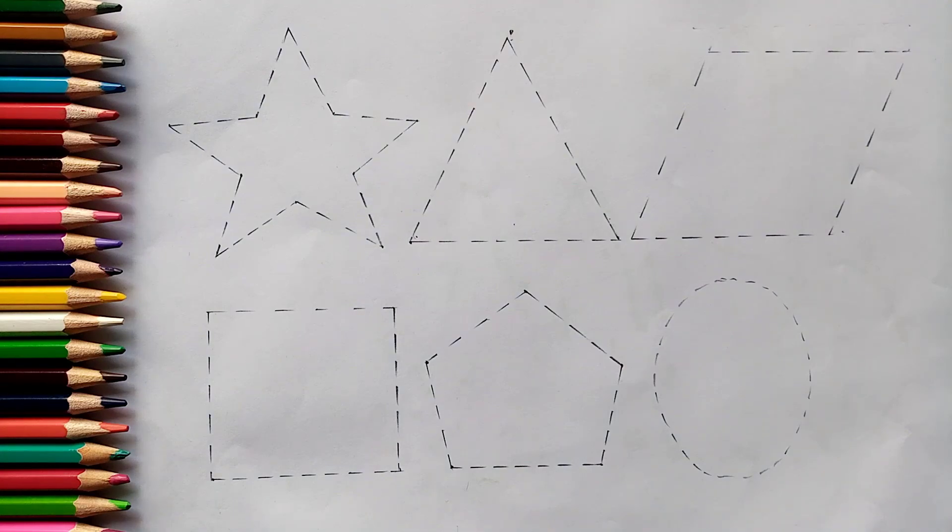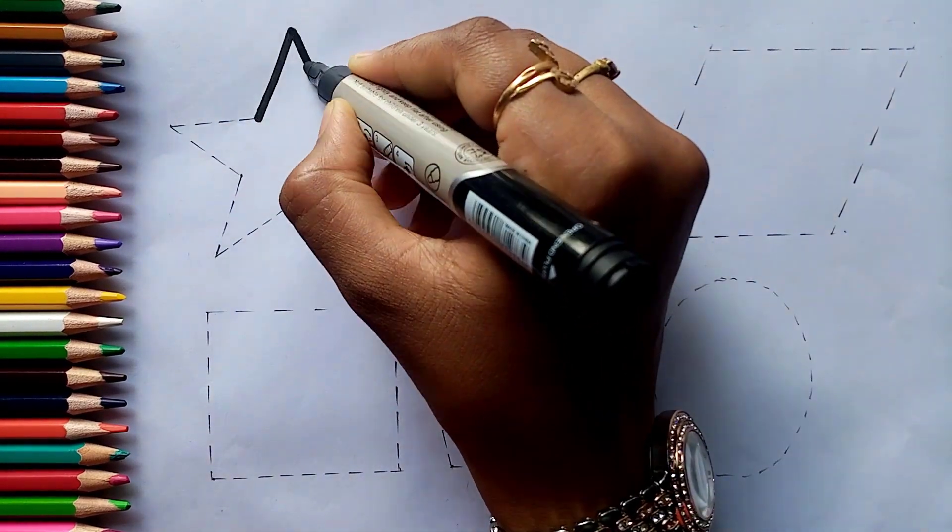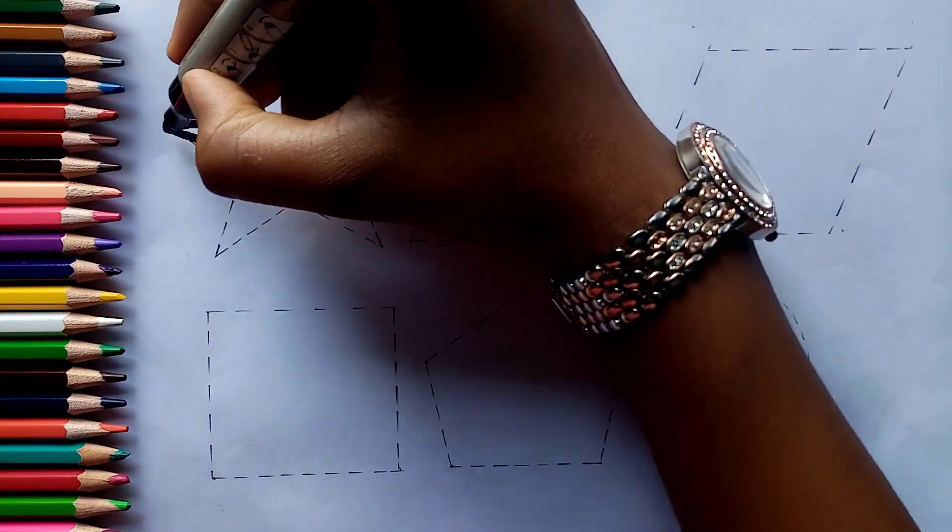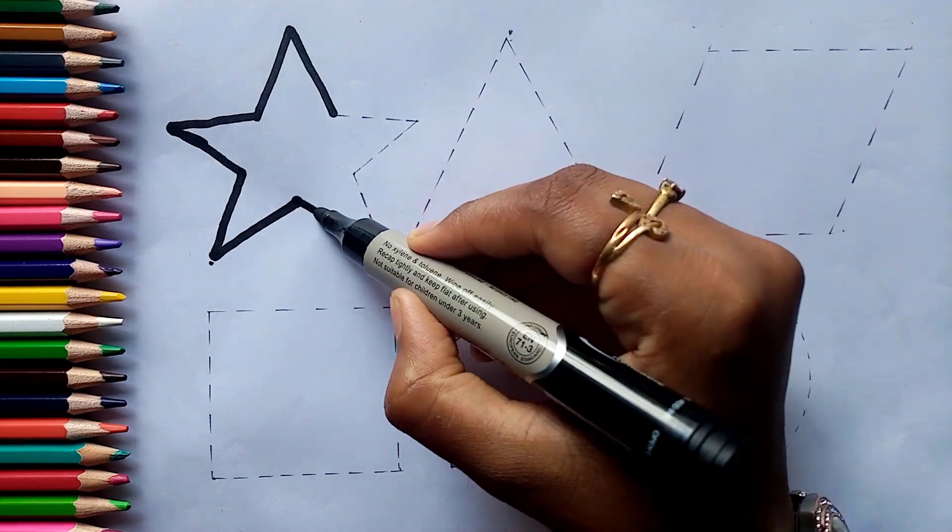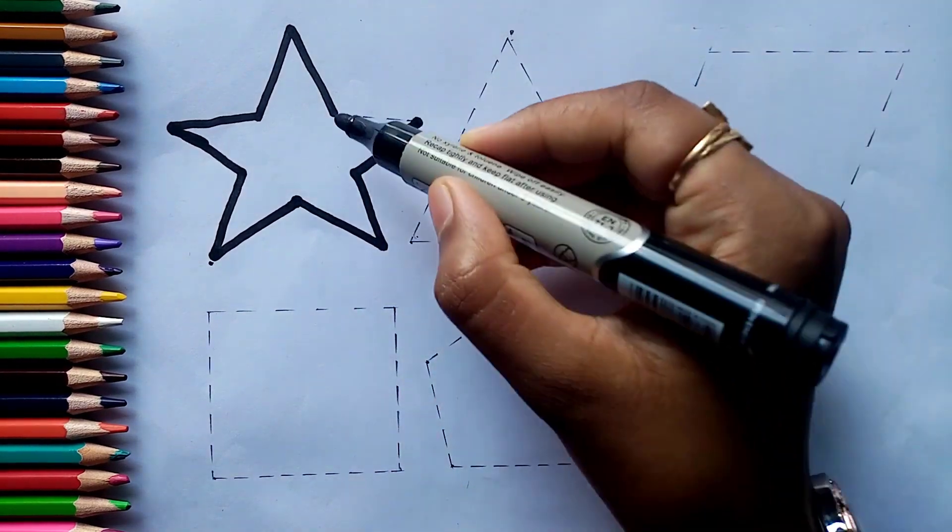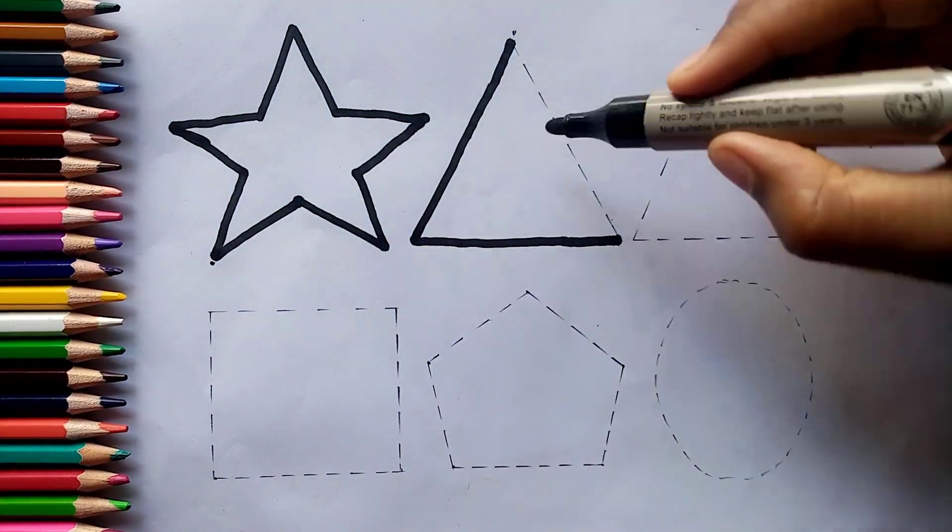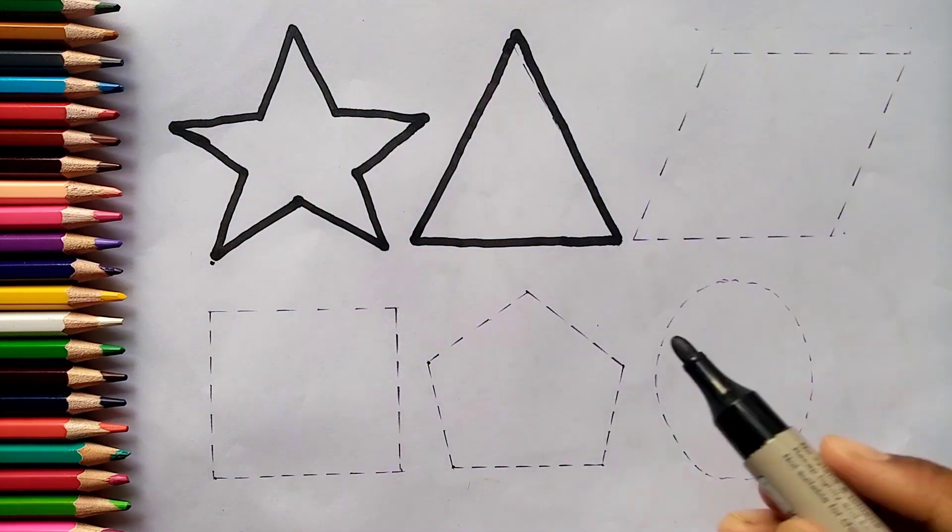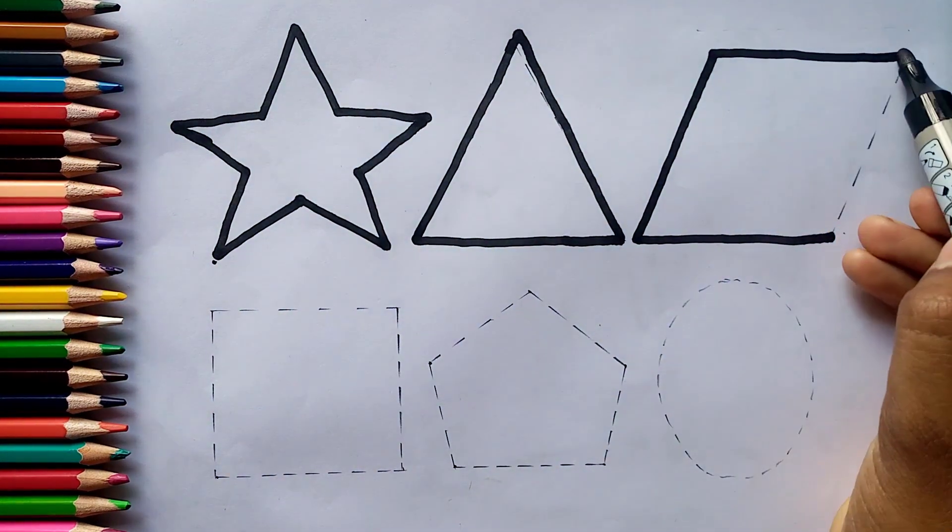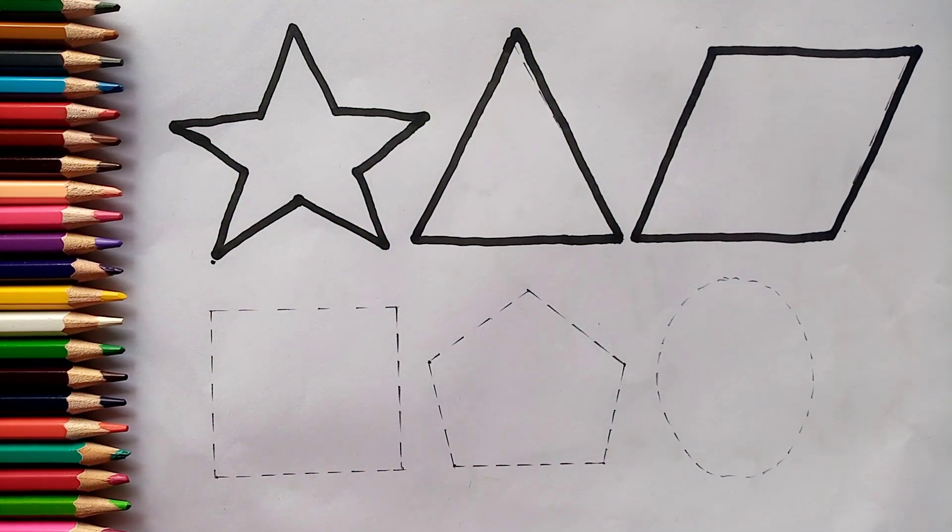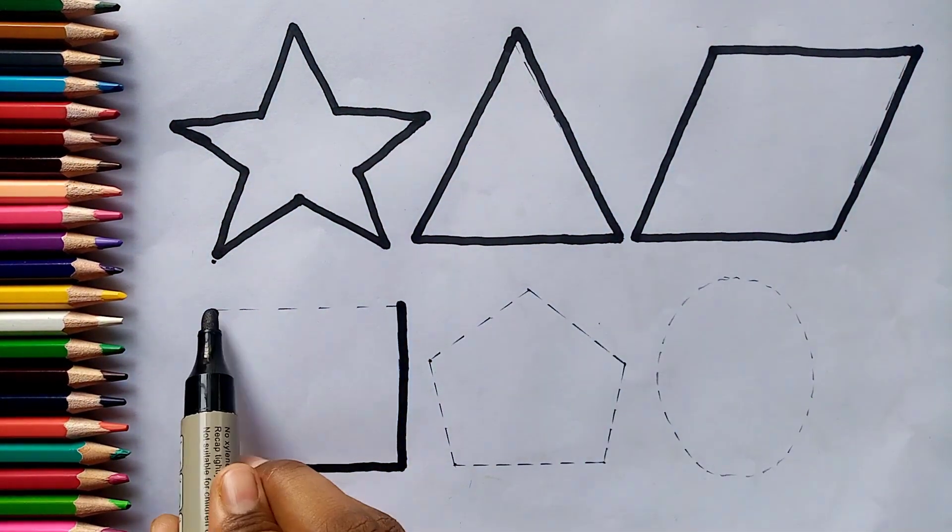Let's learn to draw some 2D shapes. Star. Triangle. Parallelogram. Square.